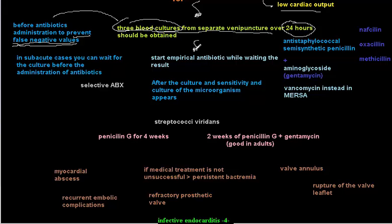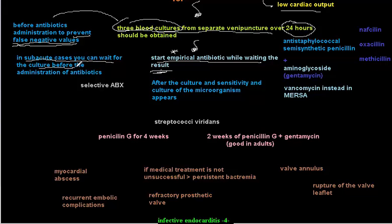After taking the blood cultures, you can start empirical antibiotics while waiting for results. In acute cases especially, you should start immediately with empirical antibiotics even before culture results are available. In some acute cases, you can sometimes wait for the culture before starting antibiotics.